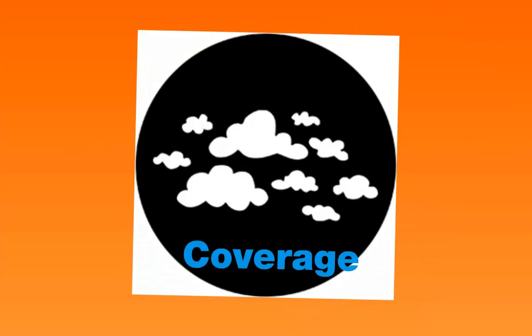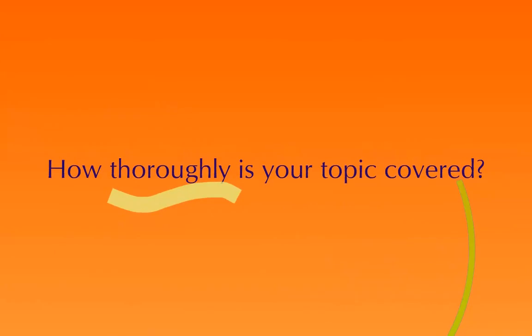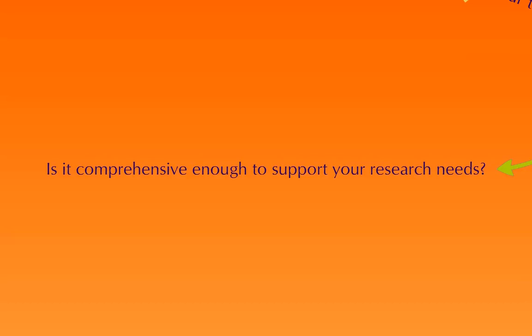Coverage. In addition to being objective or biased, you need to look at what kind of coverage this source gives to your topic. How thoroughly is your topic covered? Is it just skimming over it — a very superficial overview that's not really going to give you what you want? Is it comprehensive enough to support your research needs? Some of these criteria are about the quality of the source, and some are about applicability to your research — we're looking at both things here.